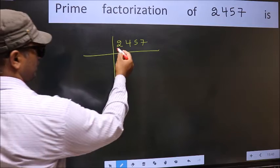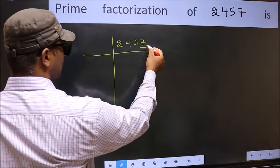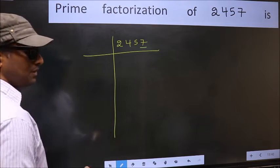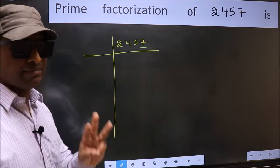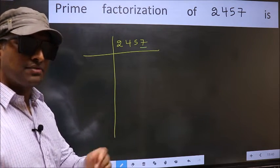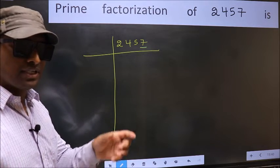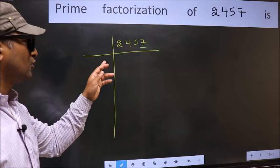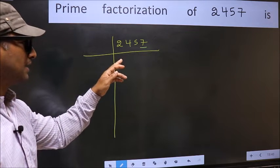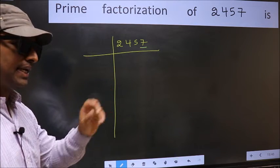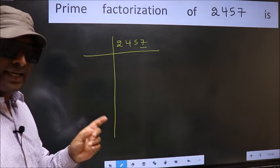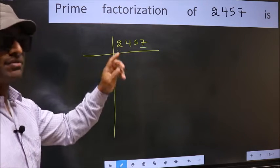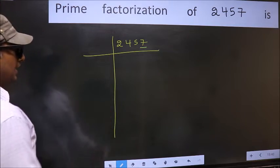In this number, the last digit is 7, which is not even, so this is not divisible by 2. Next prime number is 3. To check divisibility by 3, we should add the digits: 2 plus 4 plus 5 plus 7. We get 18, and 18 is divisible by 3, so this number is also divisible by 3. So take 3 here.